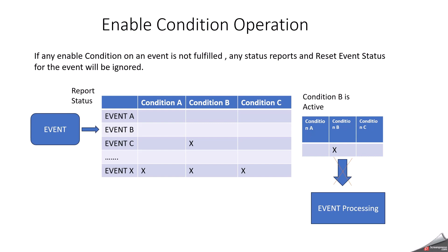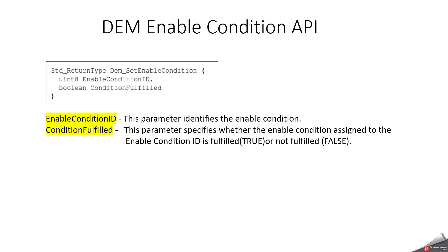If any enable condition on an event is not fulfilled, any status reports and reset event status for that event will be ignored. For example, with multiple events and conditions A, B, C — event C is active only in condition B, but event X is active only when all three conditions are active. Since only condition B is active, event C will be allowed but event X will not be allowed because conditions A and C are not active. This is how enable condition operation works.